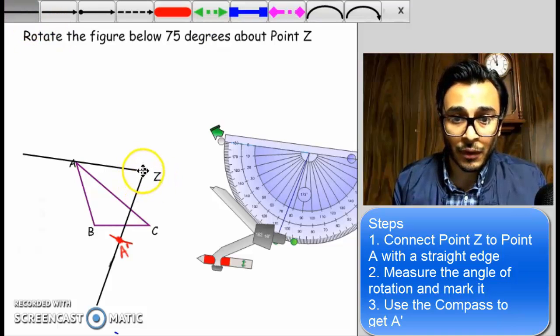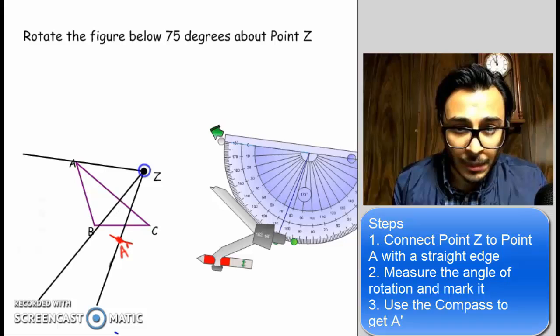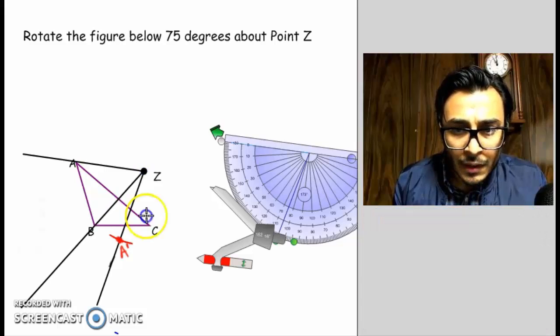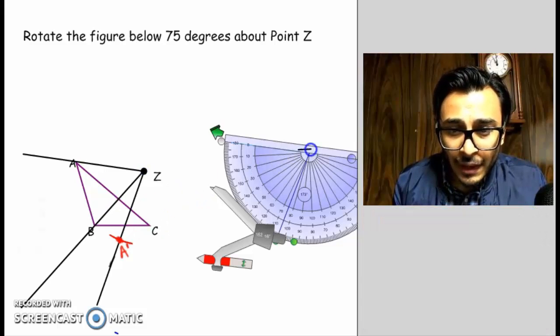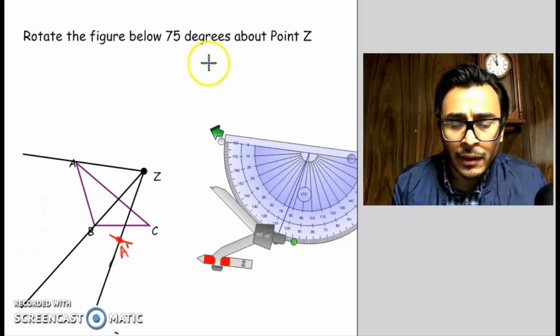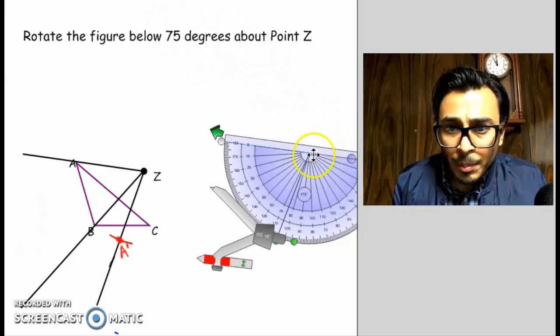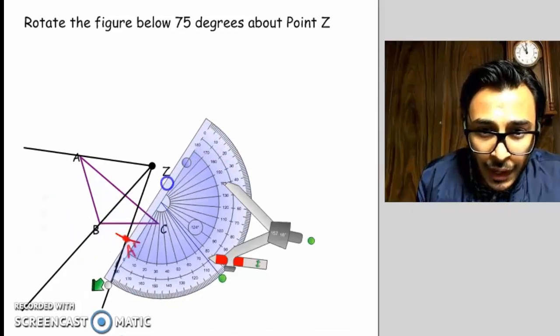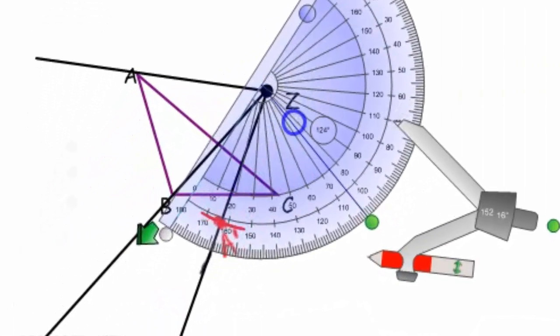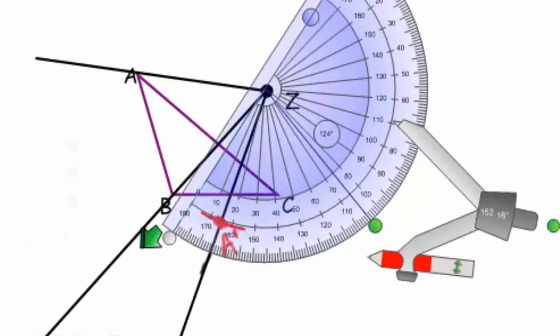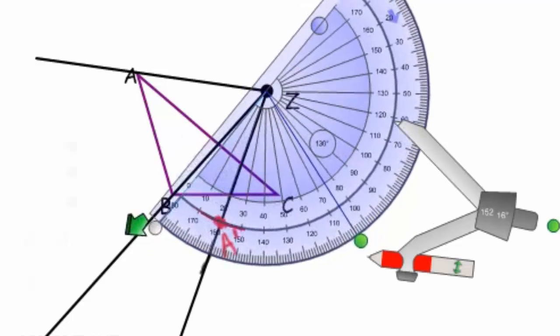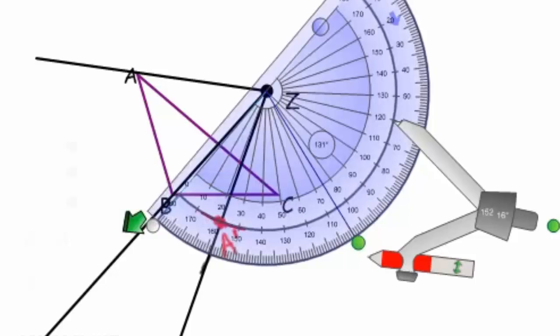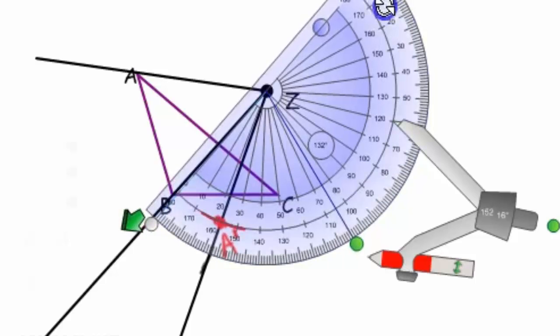So I'm going to do point B first. So I'm going to connect Z to B. Take my protractor, my handy dandy protractor. And I'm going to place it perfectly so that that zero degree mark aligns perfectly with that line I just sketched. Sometimes this takes a little bit of trial and error. There it is. I can see it aligns perfectly.